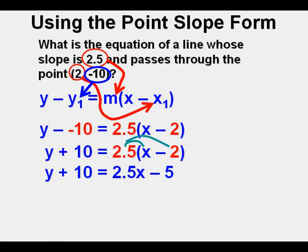Our last step is to move out the 10 on the left side by subtracting it from both sides of the equation. 10 minus 10 cancel on the left side.